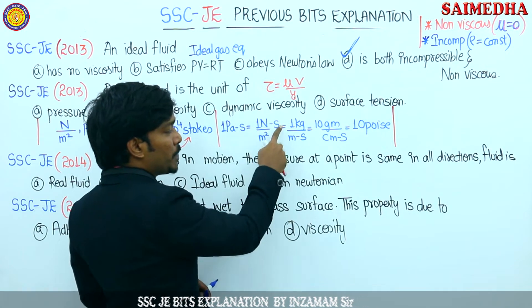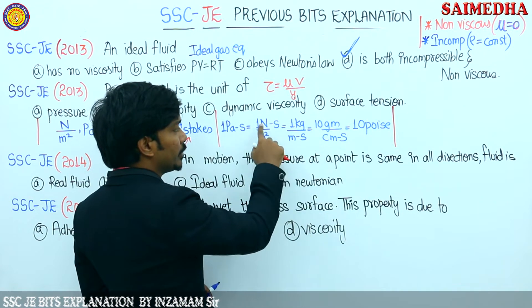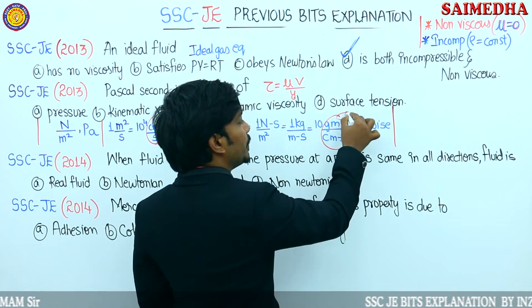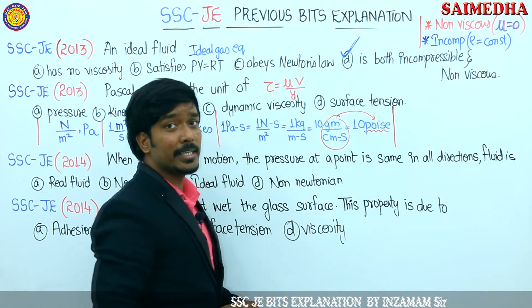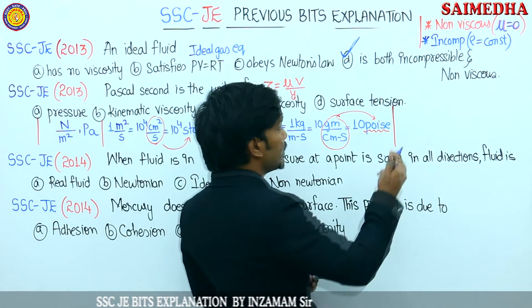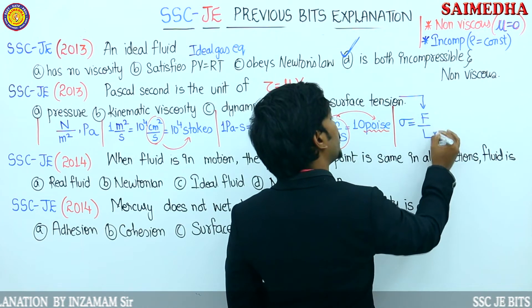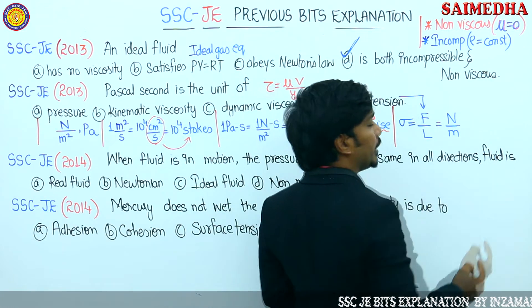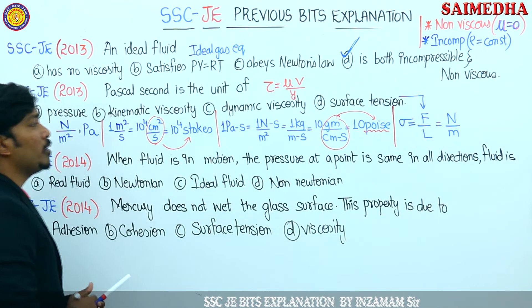Pascal can be written as Newton per meter square. 1 kg per meter second, 10 gram per centimeter second, and 1 gram per centimeter second - Poise - are the same. Last one: surface tension. Surface tension sigma is force acting per unit length. Force unit is Newton, length is meter, so Newton per meter is the unit for surface tension.